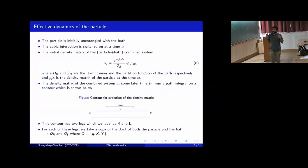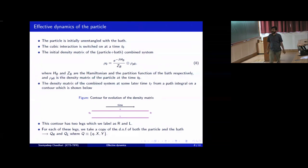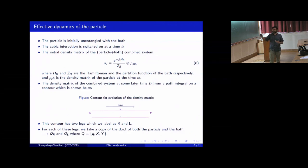To study the dynamics of this Brownian particle, we first specify the initial density matrix of the particle and the bath. We assume that initially they are unentangled, and then we ask how this density matrix evolves. One can obtain a path integral representation of the density matrix at some later time T_f, where the path integral has to be performed on a contour with two legs. We have to take a copy of the degrees of freedom of both the particle and the bath for both legs, which we denote by Q_R and Q_L, where Q represents all the degrees of freedom of the particle and the bath, Q, X, and Y.